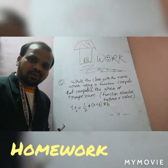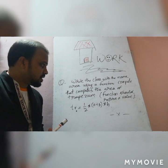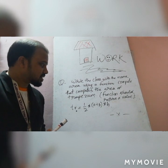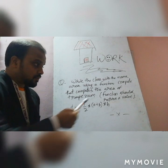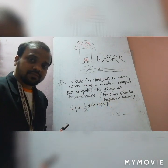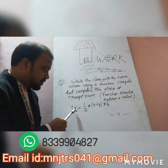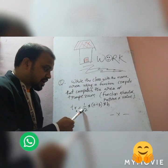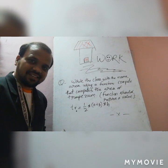Here is the homework for you. Write a class with the name Area using a function compute that computes the area of a trapezium. The function should return a value, meaning you use the first method — receiving and returning. The formula is: tr = (1/2) * (a + b) * h.